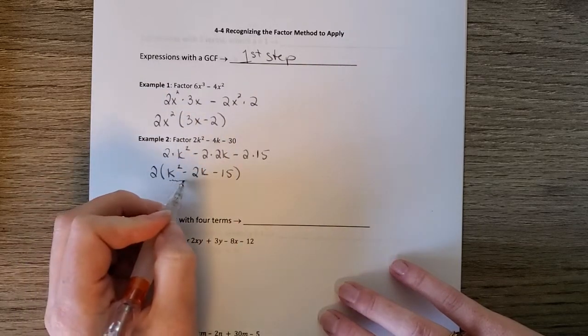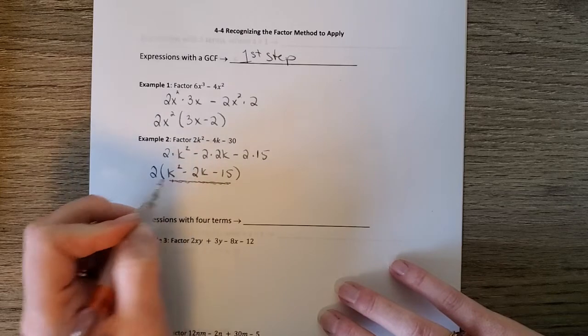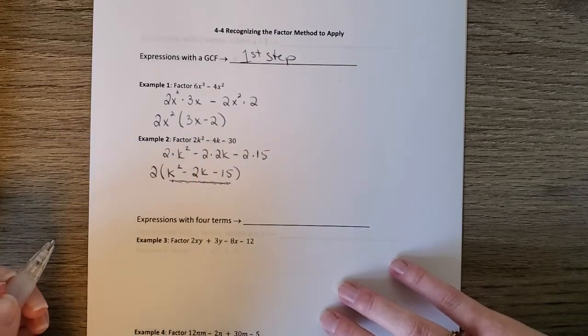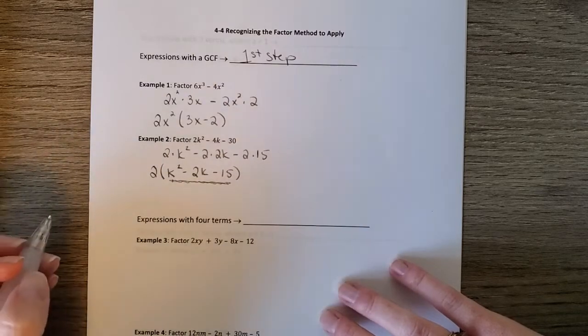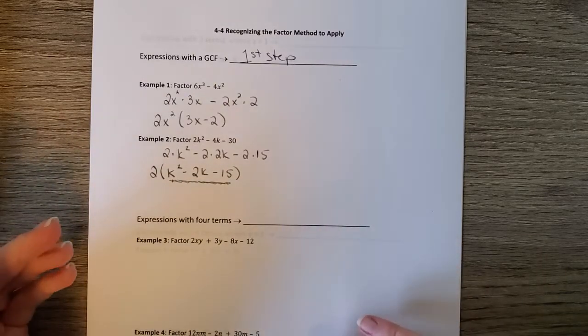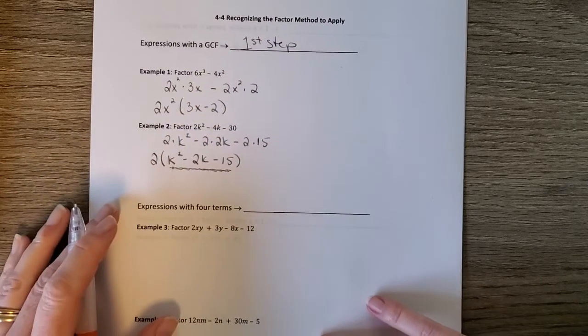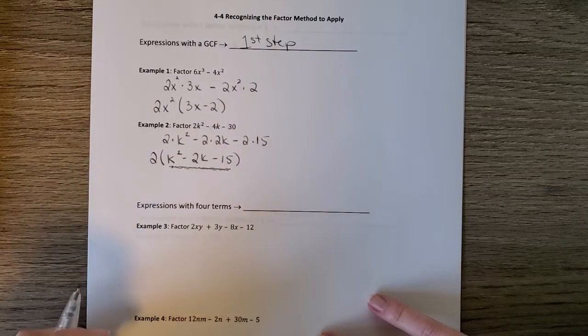Now again, you might be able to factor this further. For the sake of doing this section, we're just looking at GCF, but you would then see if you could factor further, and in this case you would be able to. So that's the first step. Anything with GCF, do that first, and then continue factoring using other methods.